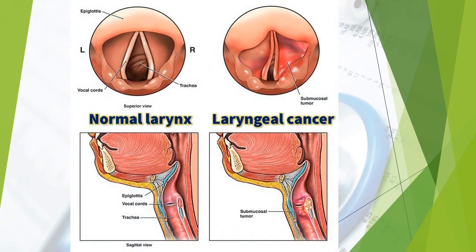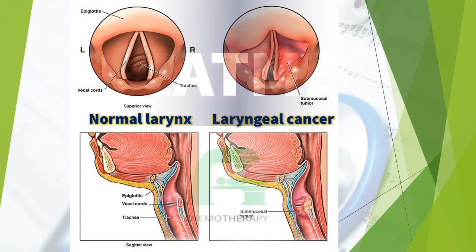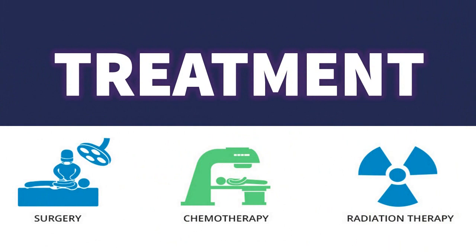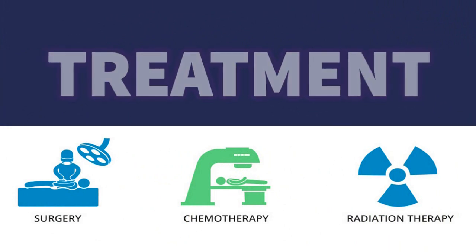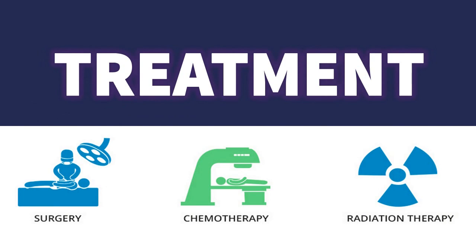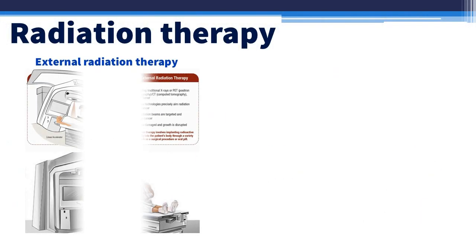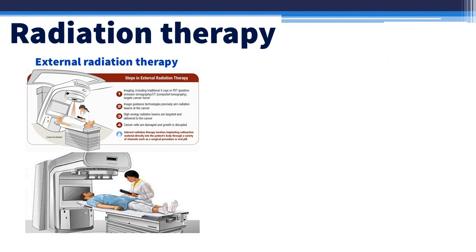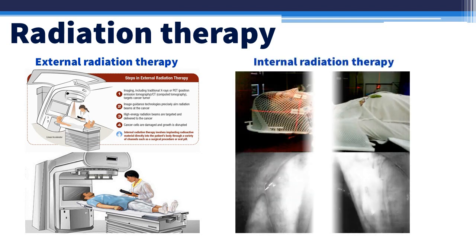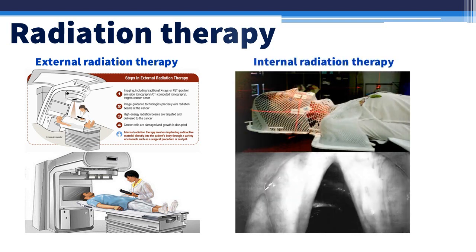The left side shows a normal larynx and the right side shows a laryngeal tumor. Cancer treatment includes surgery, chemotherapy, and radiation therapy. Radiation therapy has two types: external radiation therapy, and internal radiation therapy, which uses a radioactive substance sealed in needles, seeds, wires, or catheters placed directly into or near the cancer.